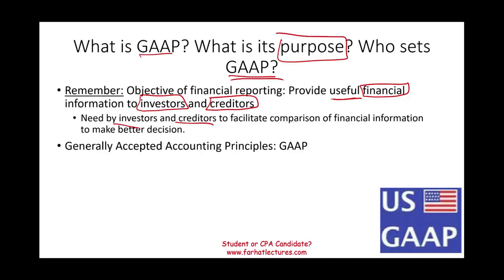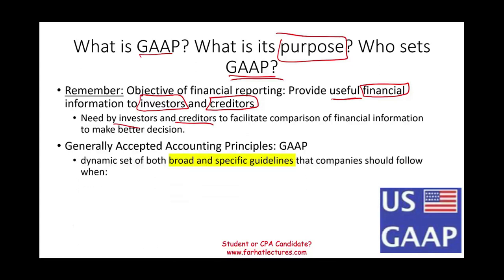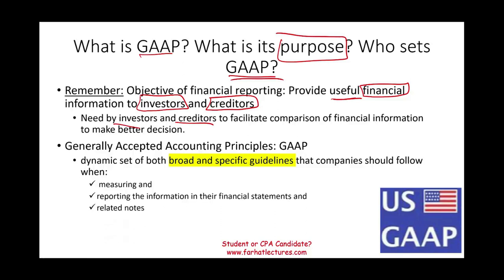This is why we need a uniform set of accounting standards to help us compare the performance of various companies. And this is where GAAP comes into place. GAAP is specific as well as broad guidelines that companies follow when preparing their financial statements. It helps companies measure their assets, liabilities, how to report information on financial statements, and what to report in the notes. Once everything is comparable, investors and creditors can make better decisions. The question becomes: who sets GAAP? Who creates GAAP?